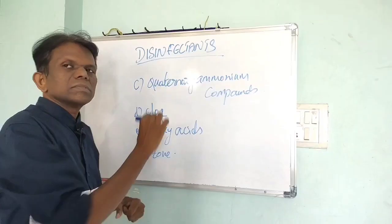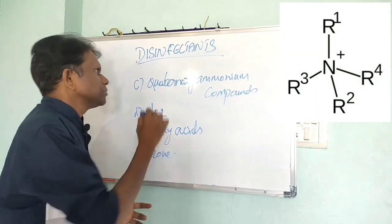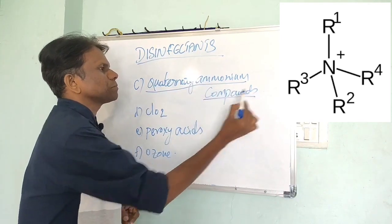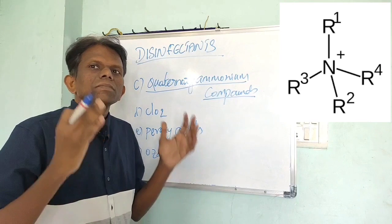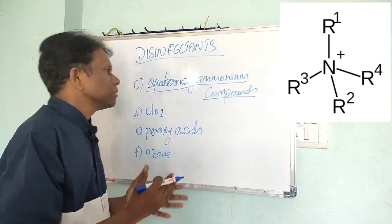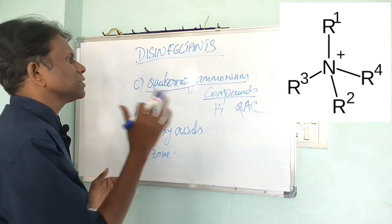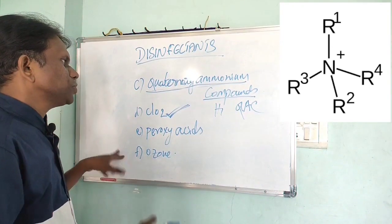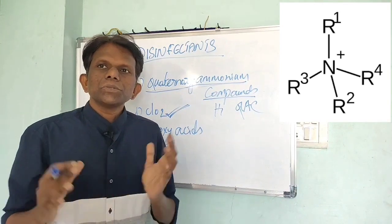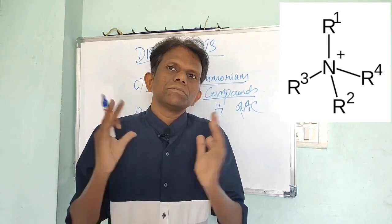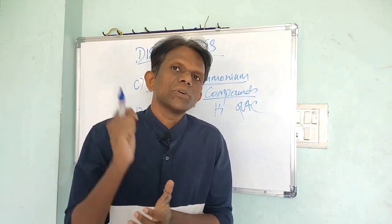The third disinfectant is Quaternary Ammonium Compounds, also called QAC. It is used mainly as a surface disinfectant, widely used in hospital industries to sanitize surfaces, and also in food processing industries as a surface sanitizing antimicrobial agent.